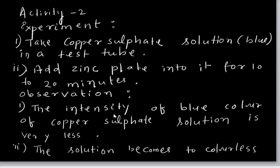Activity 2. Experiment: take copper sulphate solution (blue colour) in a test tube. Add zinc granules or a zinc plate into the copper sulphate solution and keep for 20 minutes. Do not disturb it. Then observe what happens.